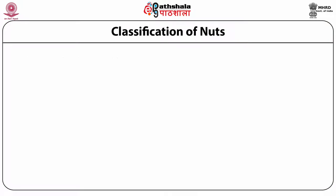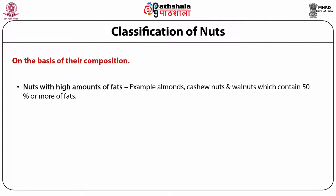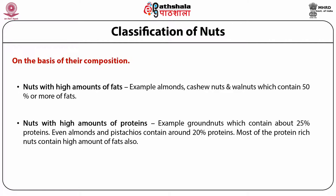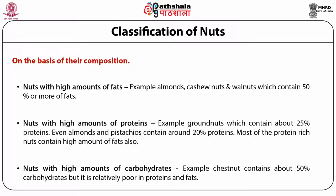Nuts have been classified on the basis of their composition into three classes. The first is nuts with high amounts of fats — examples are almonds, cashew nuts, and walnuts which contain 50% or more of fats. The second group is nuts with high amounts of proteins, such as groundnuts with about 25% proteins, and almonds and pistachios with around 20%. The third category is nuts with high amounts of carbohydrates — a rare group — with chestnut as an example, containing about 50% carbohydrates but relatively poor in proteins and fats.